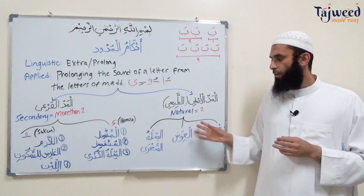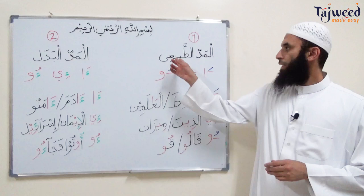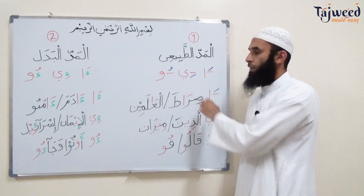Today, inshallah, we're going to look at two types of mad: mad al-tabi'i, the origin of mad, and mad al-badal. These are the first two of the nine mads. Both of them are two counts, so we're going to stretch them for two counts. But what's the difference between the two?